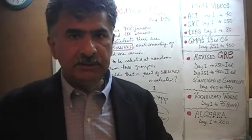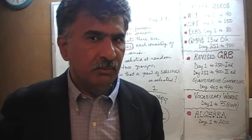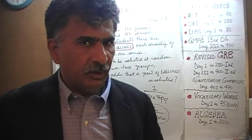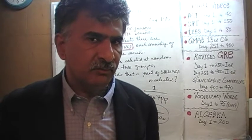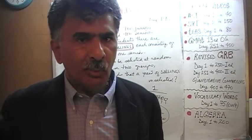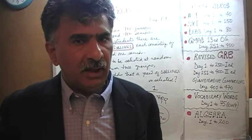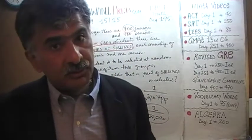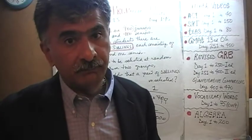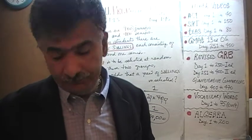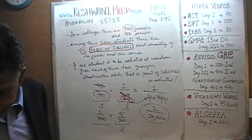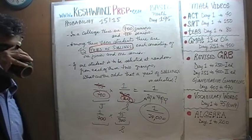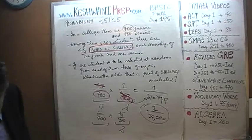The odds are 1 out of 14,000. That means if you were to pick a pair of students — one from the junior class and one from the senior class — given that there are 45 sibling pairs (one junior and one senior each), the odds are only 1 out of 14,000 that the pair you pick happens to be siblings. Not very likely. Let's do one more.